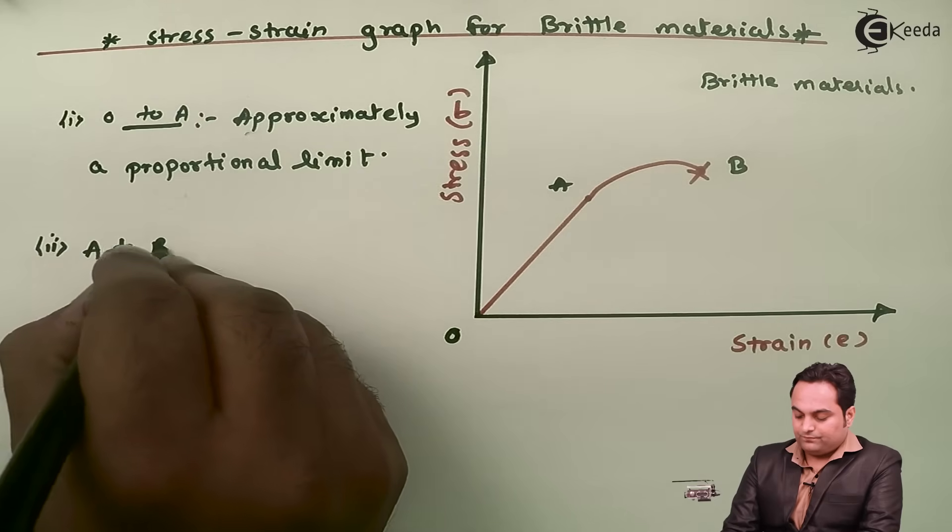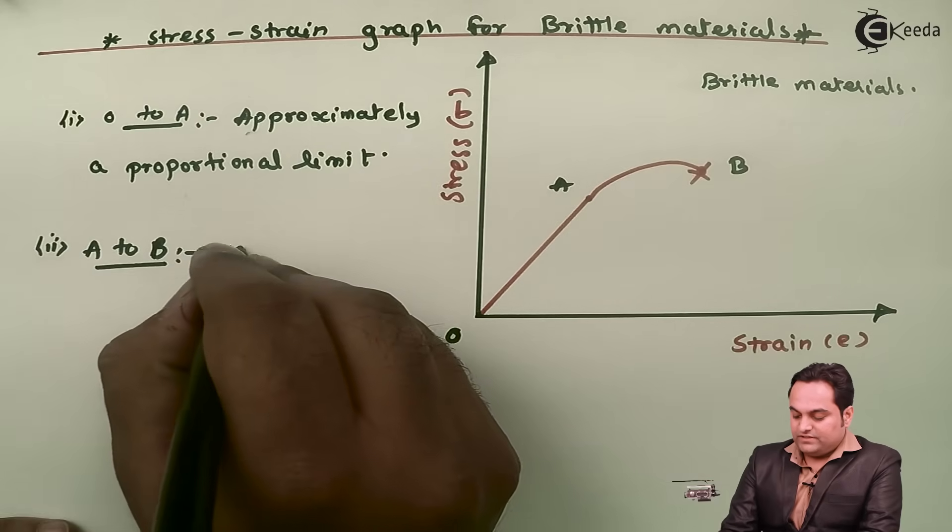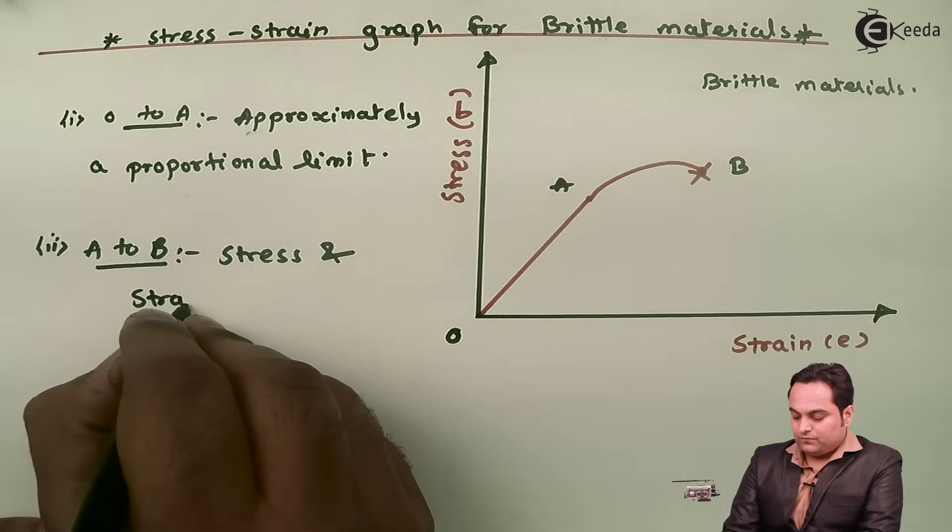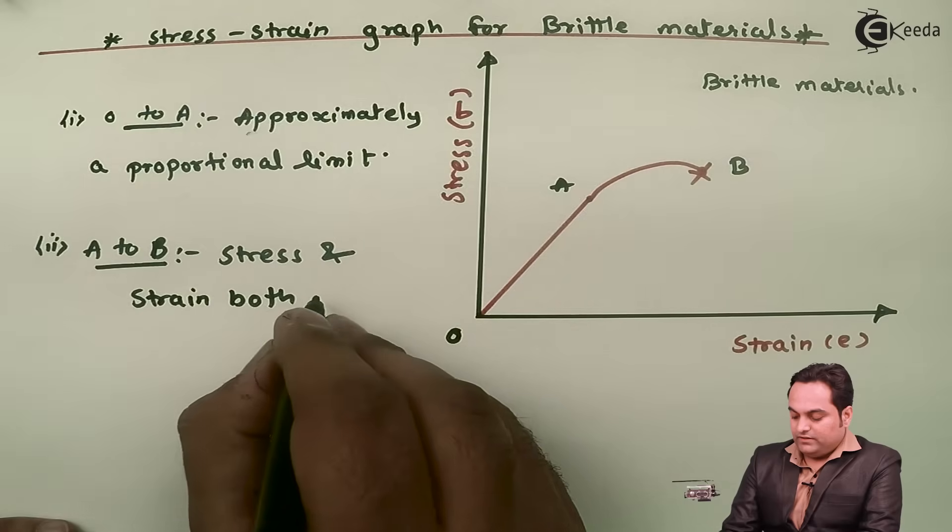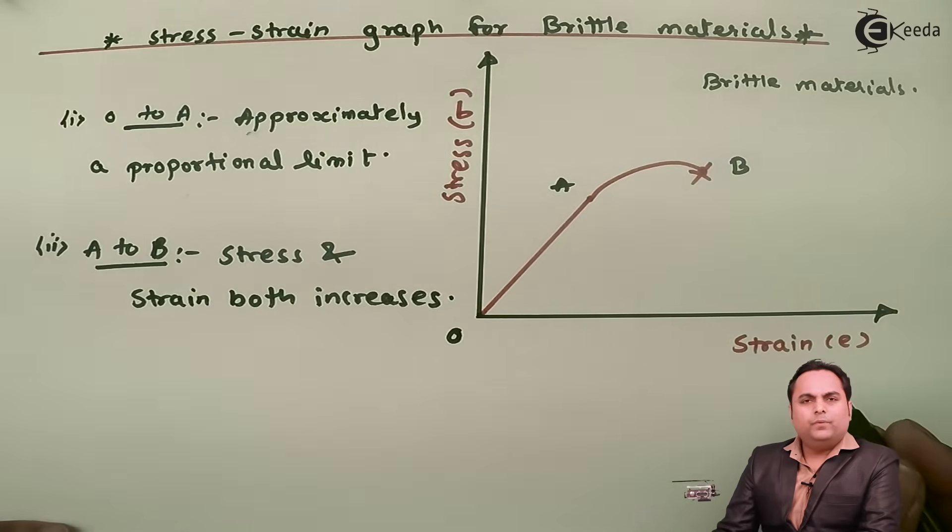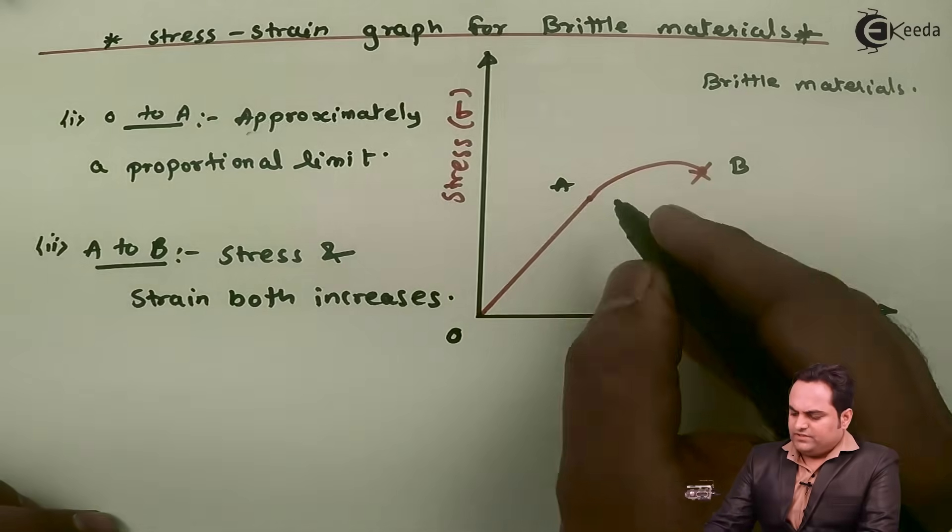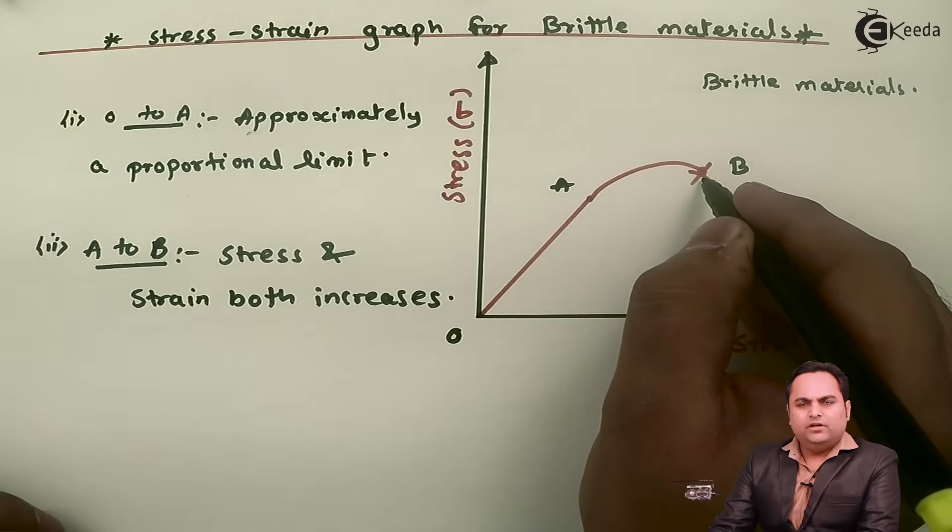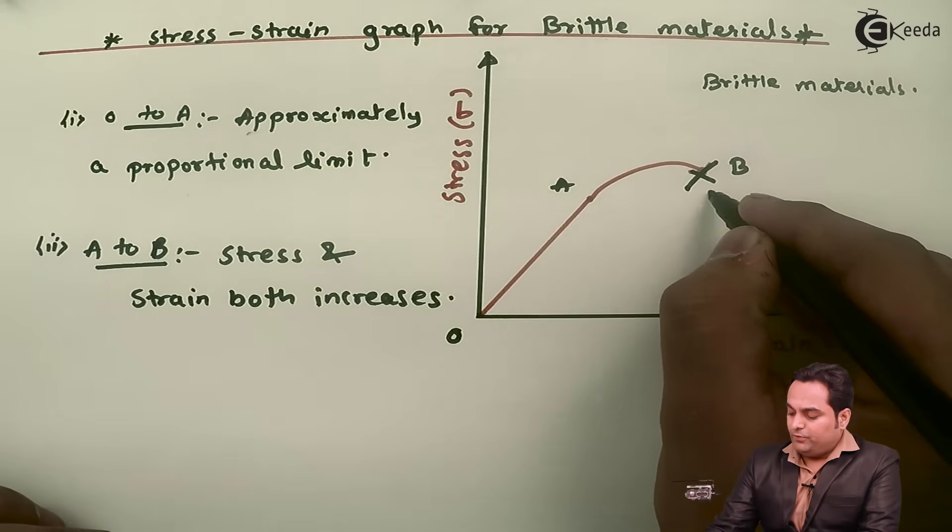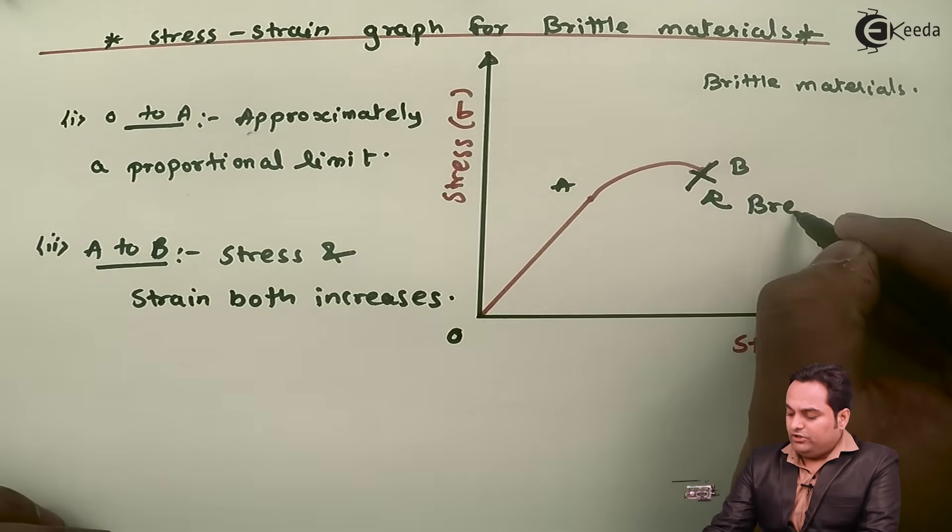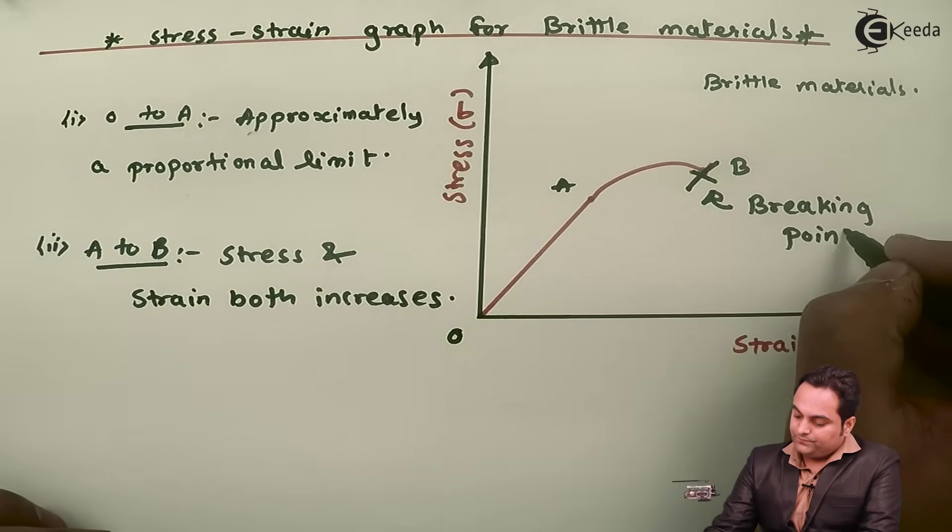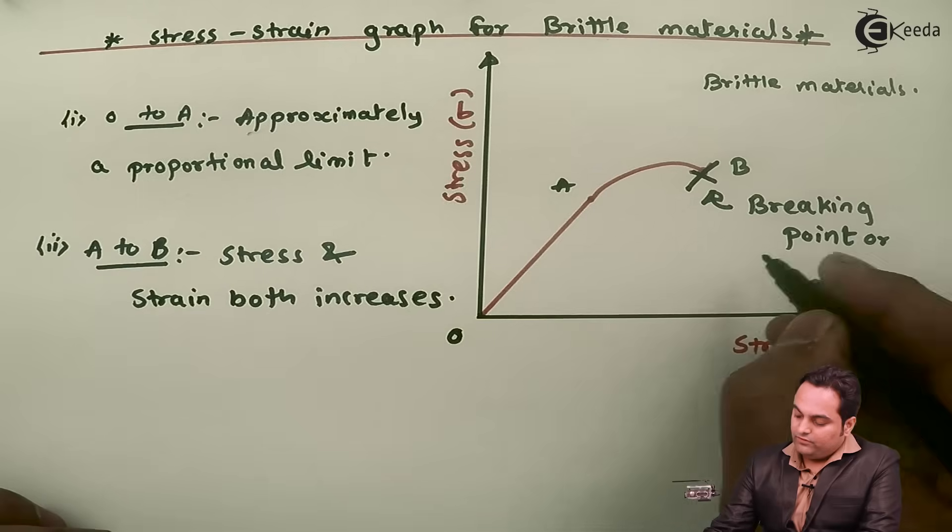Suddenly at point B, the object fails - it breaks. At point B, this is called the breaking point or fracture point.